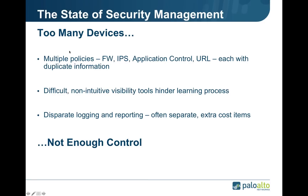The state of security management today is pretty simple: too many devices and not enough control. As you can see on the slide, there are multiple policies across all these different devices, many of which have duplicate information. We've seen cases such as checkpoint's new application blade where the firewall policy has source, destination, user, and protocol information. And then you have to go into the application control policy and enter much the same information — source, destination, user, and then the application.